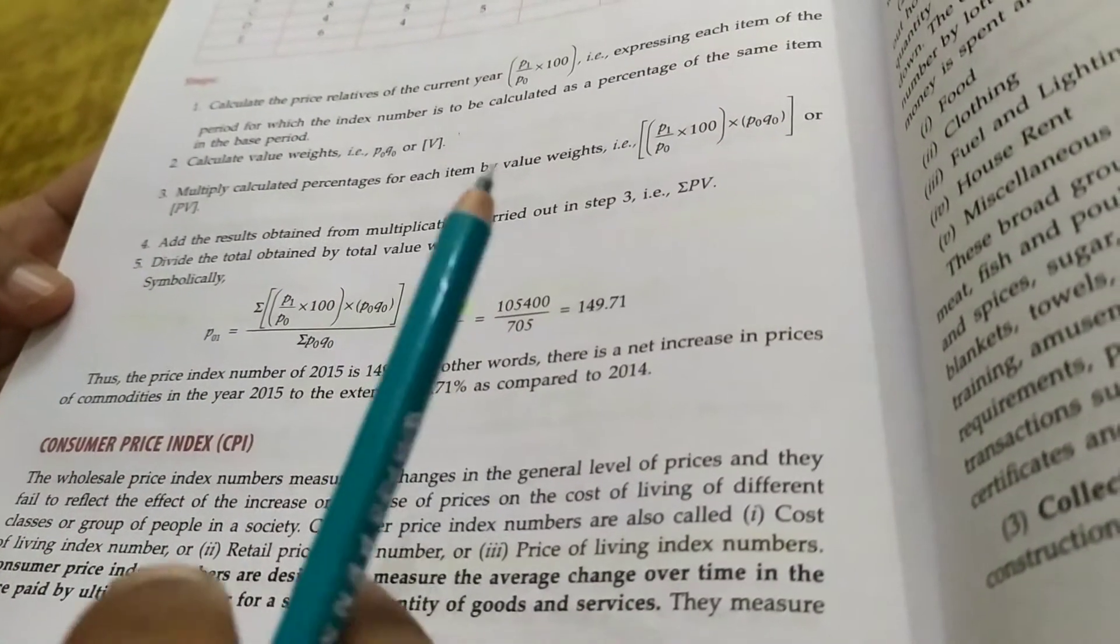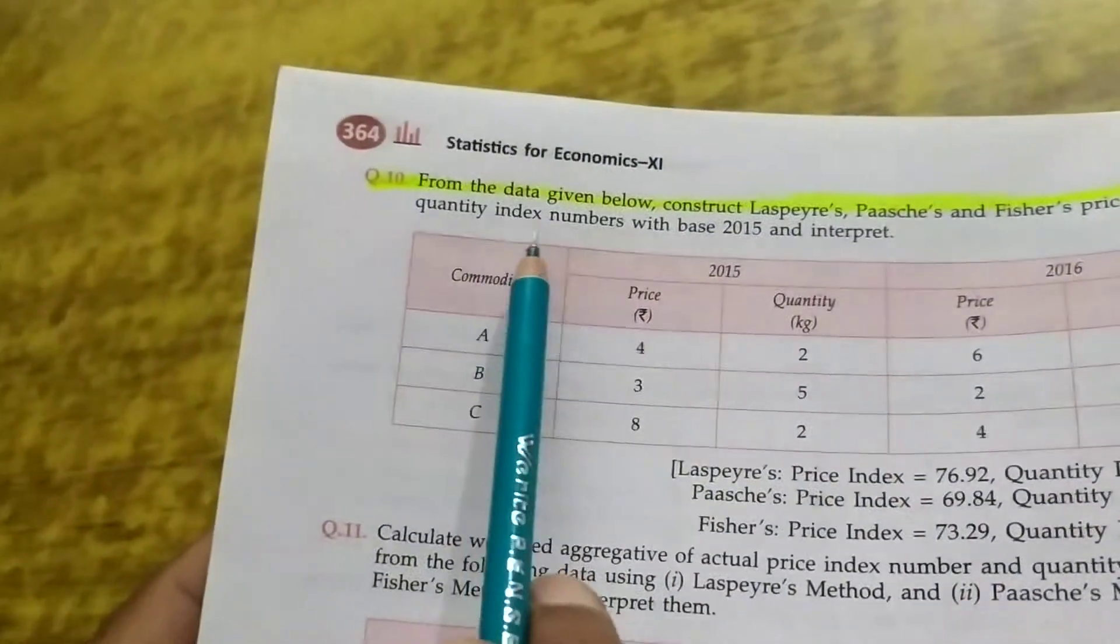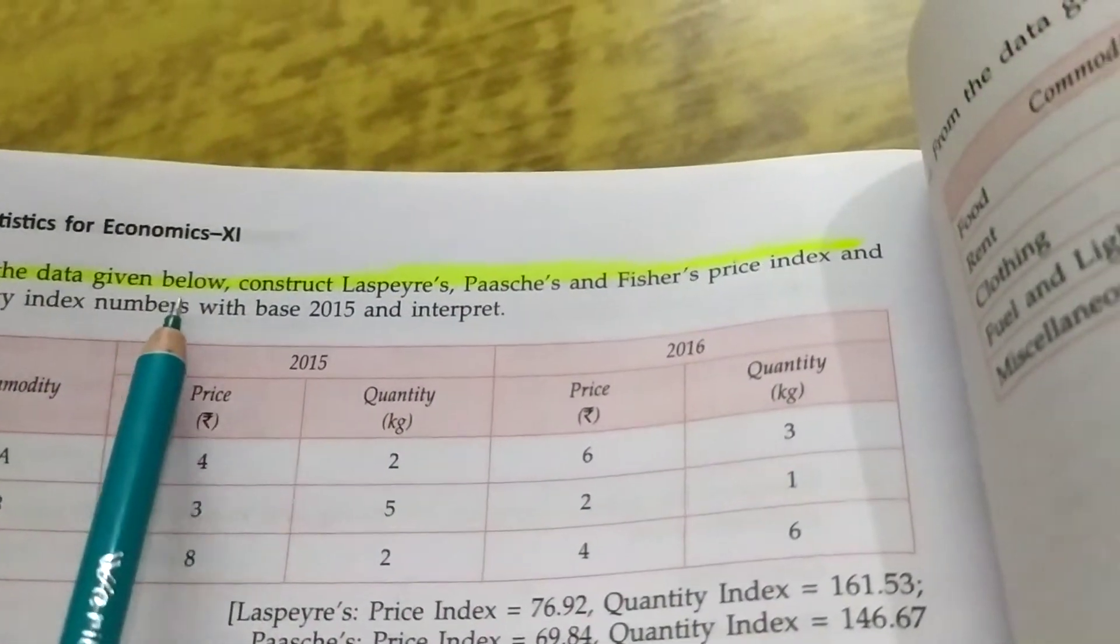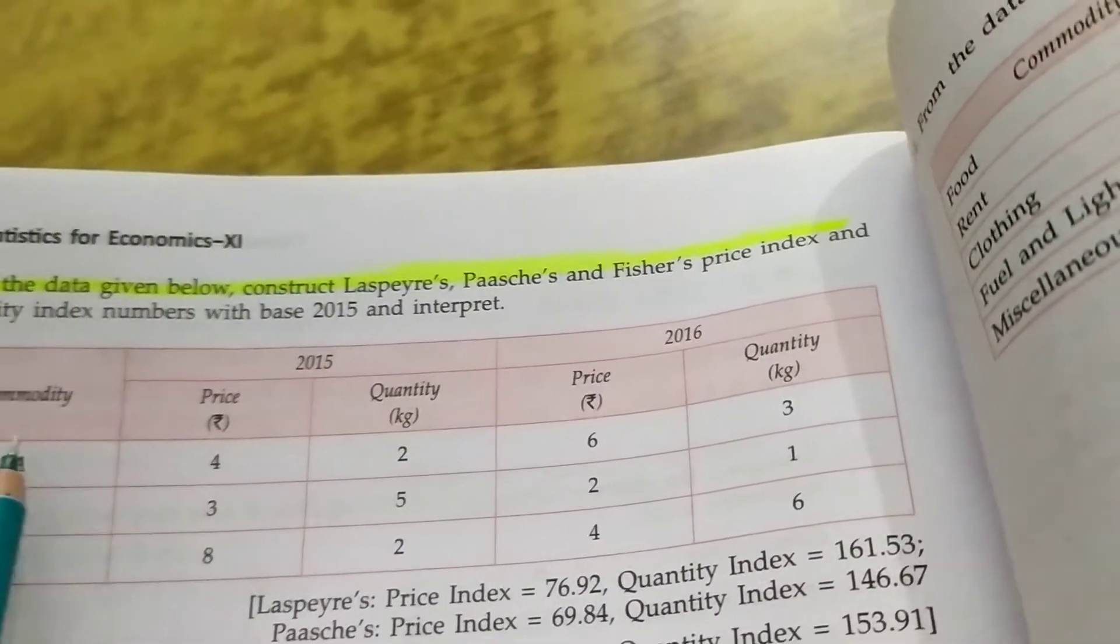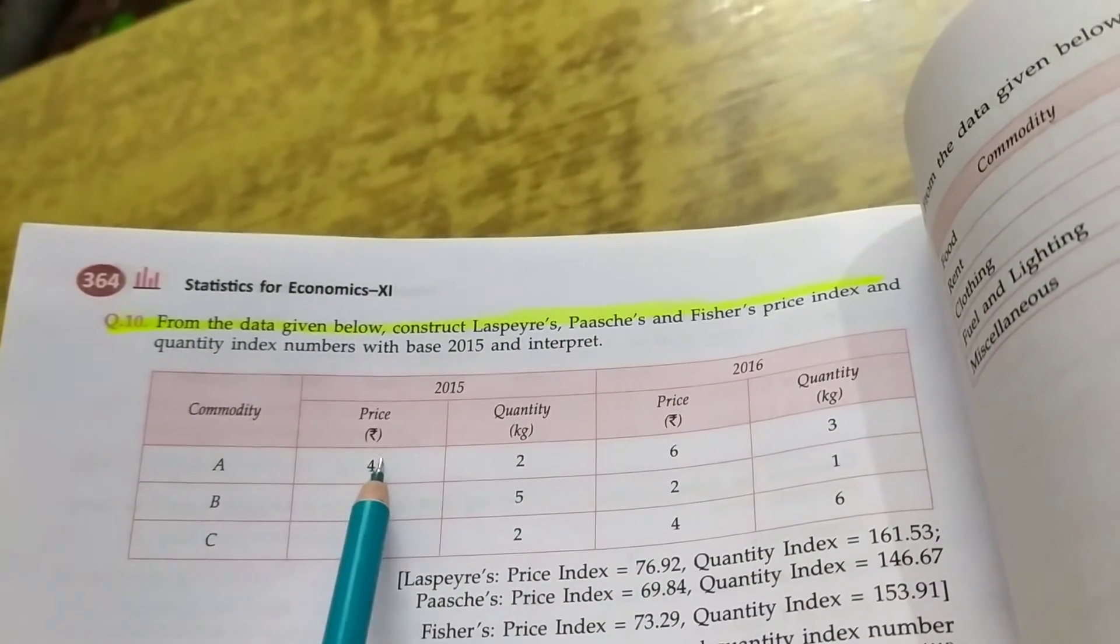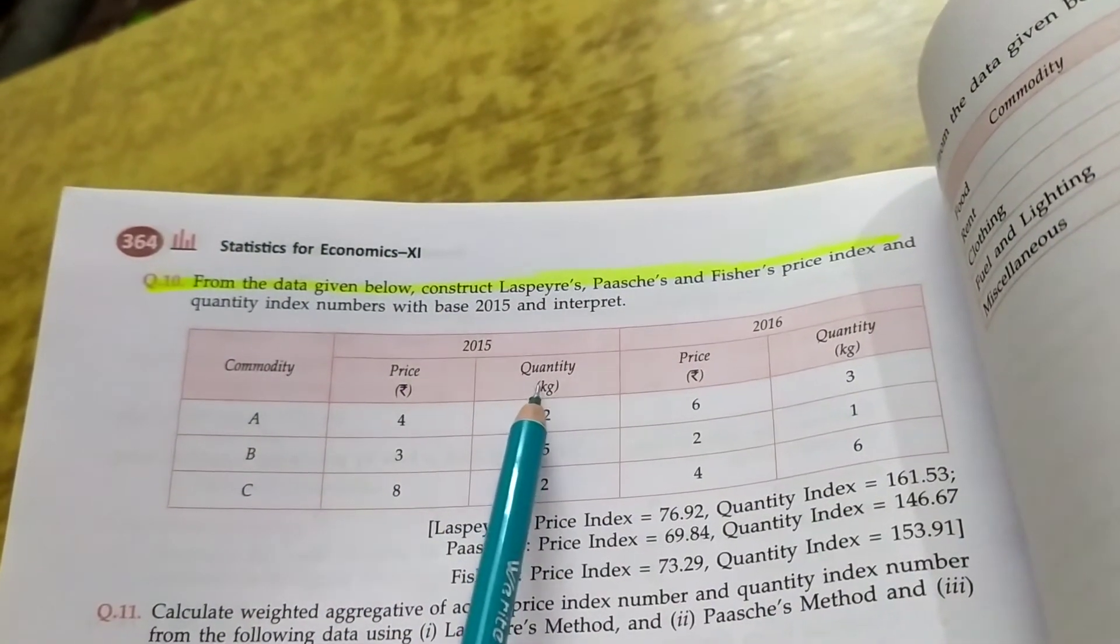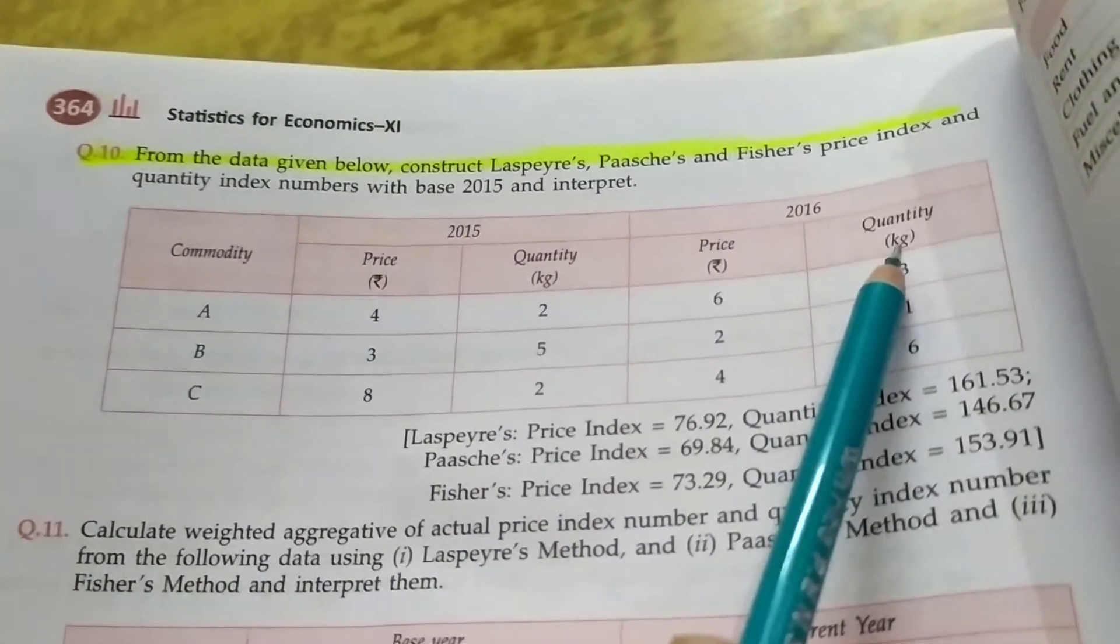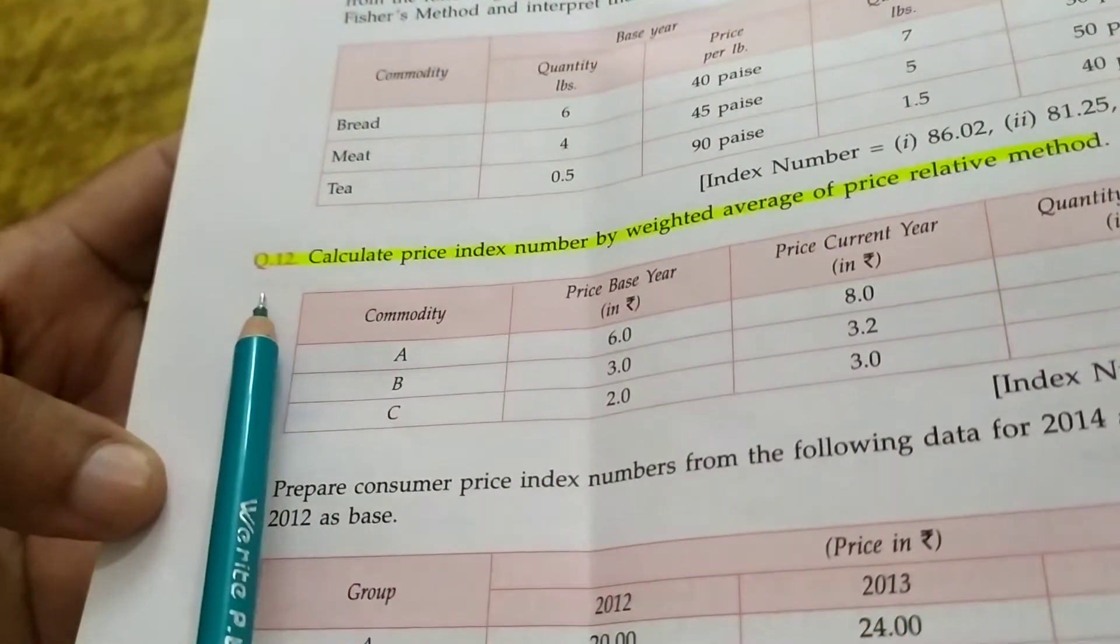And today I am going to discuss two more questions which you will do as an assignment. Question number 10: From the data given below, construct Laspeyres, Paasche and Fisher index. Commodities 2015-2016, price 438, quantity 252. So this is P0, this is Q0, this is P1, this is Q1, and you can solve it. And the last question is question number 12: Calculate price index number by weighted average of price relative method.